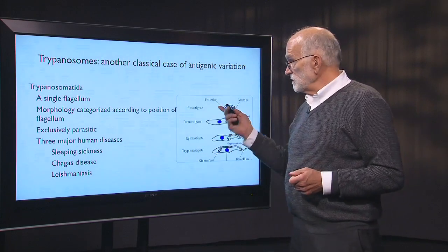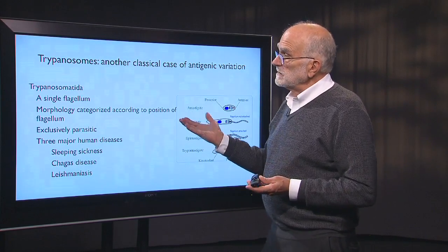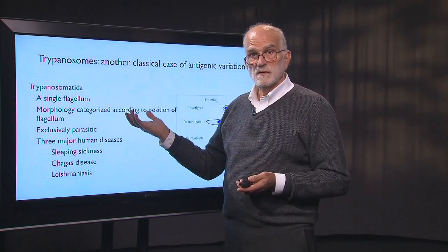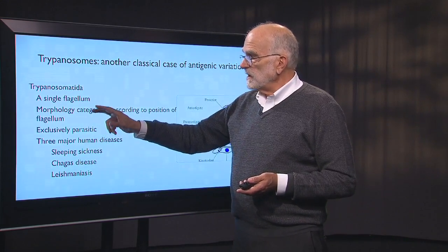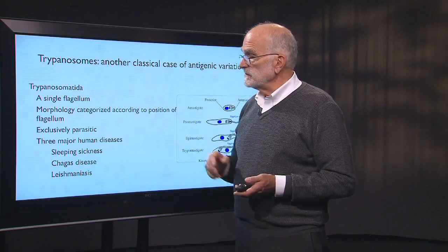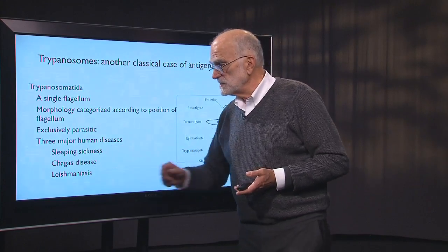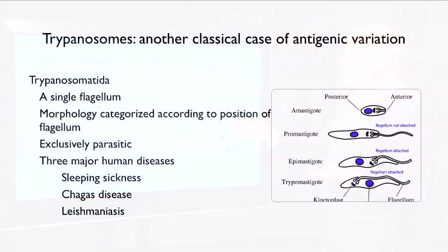Trypanosomes are another classical case of antigenic variation. The trypanosomatida are single-celled protists that have a single flagellum. Where that flagellum is on their body determines how they are categorized by morphology. They are all exclusively parasitic and cause sleeping sickness, Chagas disease, and leishmaniasis. They can be amastigote, promastigote, epimastigote, trypomastigote, and so forth, depending on where the flagellum is and whether it is attached.